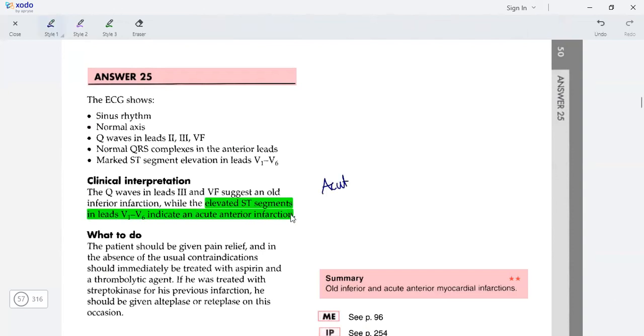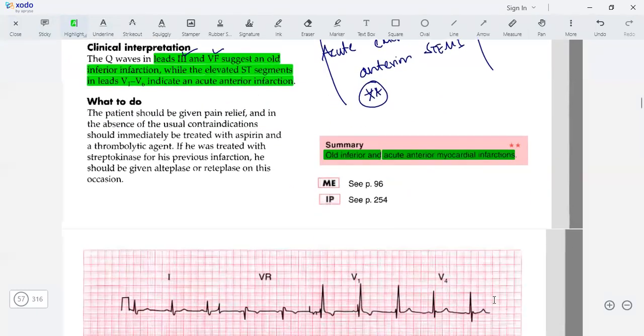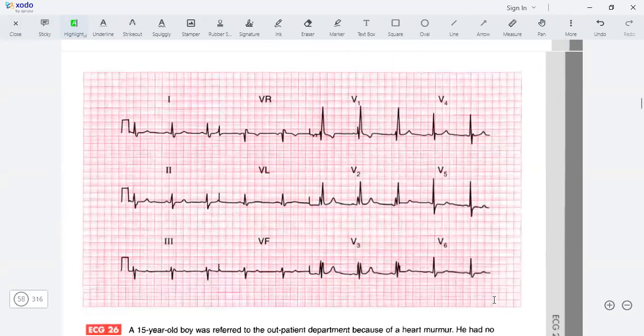This is acute extensive anterior STEMI. The Q in 3 and AVF suggests old MI inferior. Our diagnosis is correct: old inferior and acute anterior MI. We're doing well.